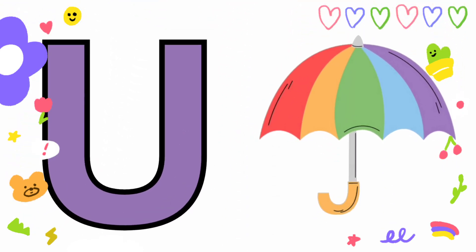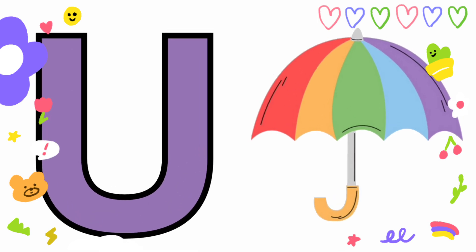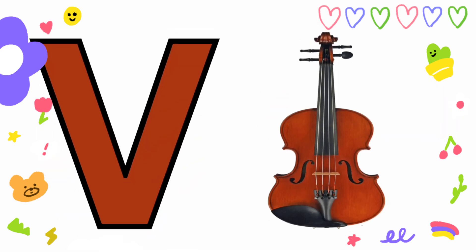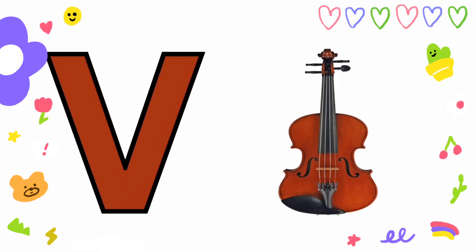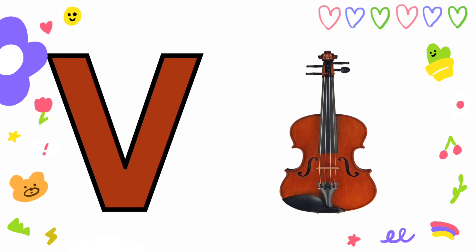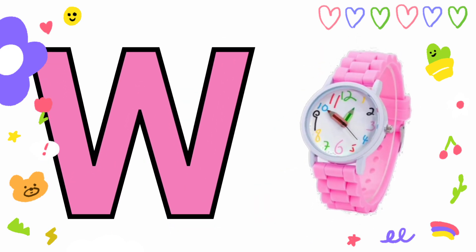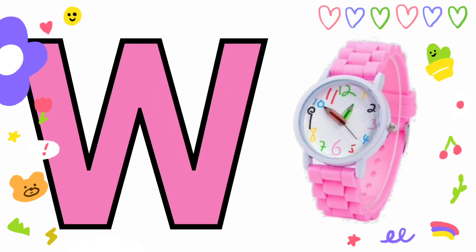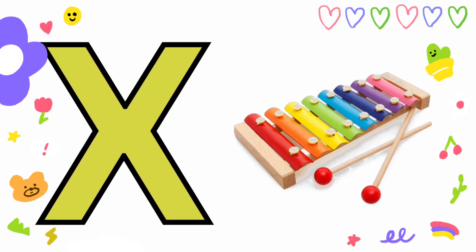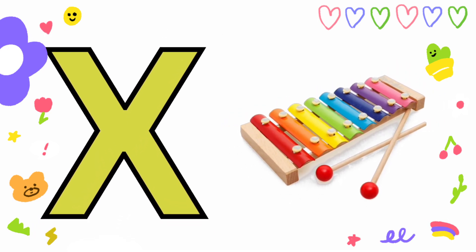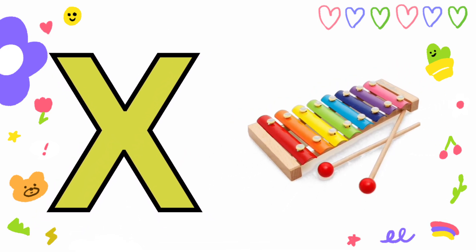U is for Umbrella, U-U-Umbrella. V is for Violin, V-V-Violin. W is for Watch, W-W-Watch. X is for Xylophone, X-X-Xylophone.